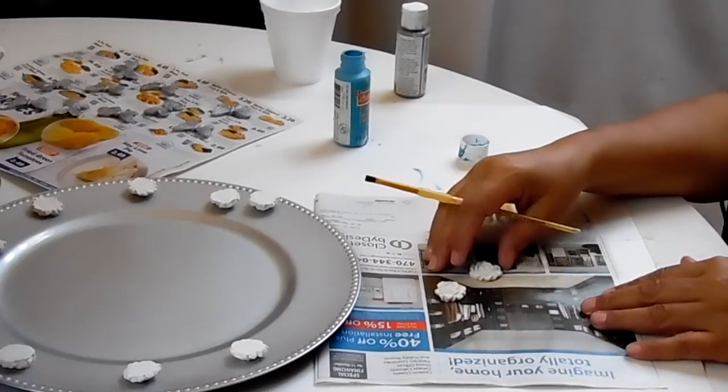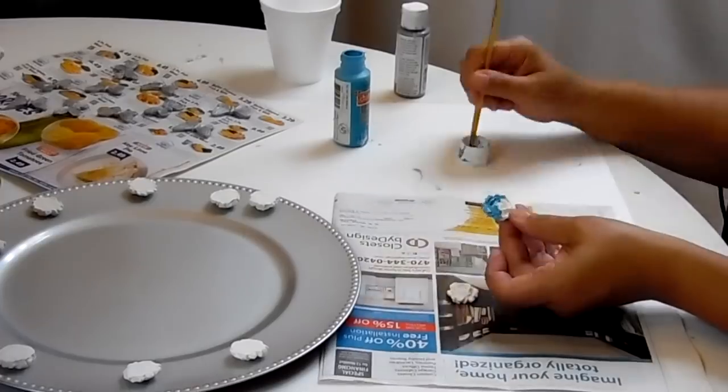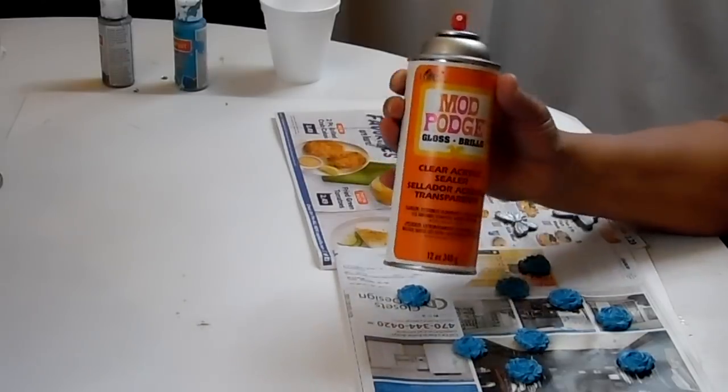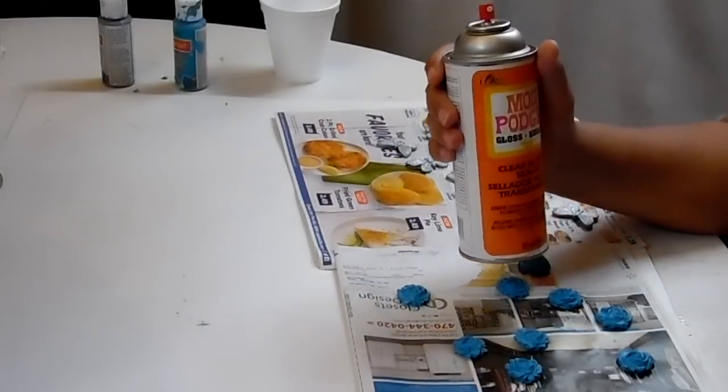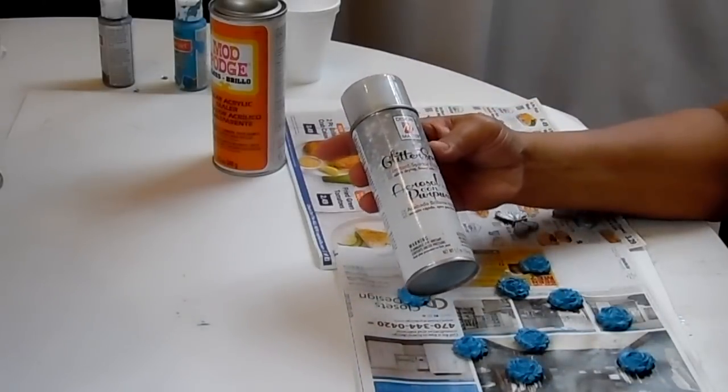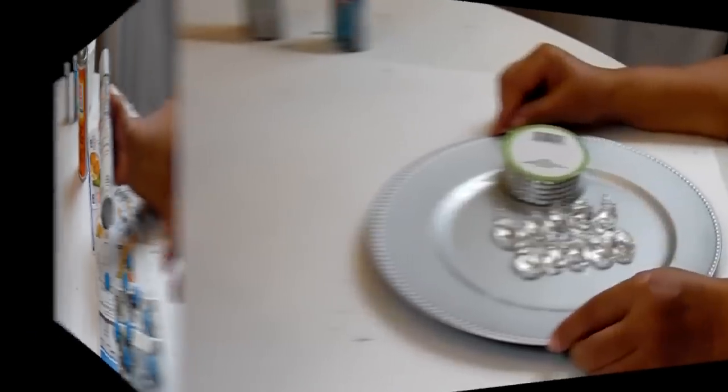Alright. So I just figured I'd come back on camera and show you a couple of the roses. I'm going to go outside and give them a coat of this Mod Podge gloss sealer. Just to seal it and give it a sheen. And then after that. I'm going to go ahead and blast it with some of this glitter spray. To give it more of a glittery bling.